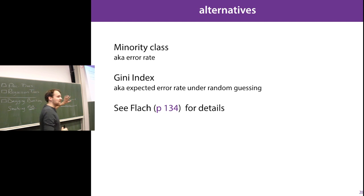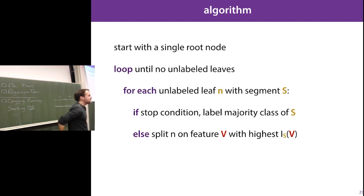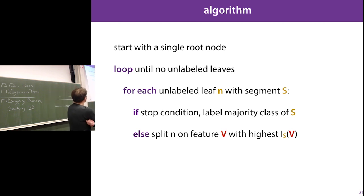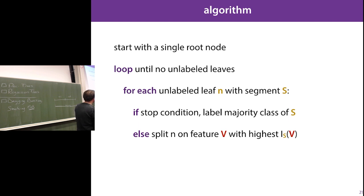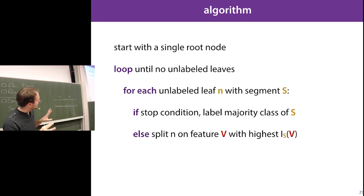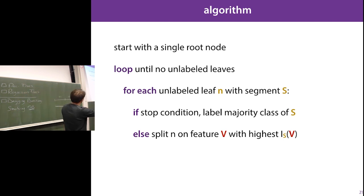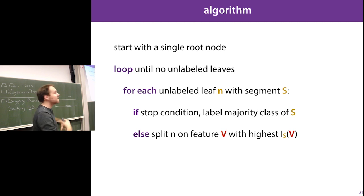The final algorithm: start with a single unlabeled root node. Loop over all unlabeled leaves. If the stop condition is reached, label the leaf with the majority class of its segment. Otherwise, check all features not yet used, find the one with the highest information gain, and split on that, creating new leaves. Keep doing this until the stop condition is met for the entire tree.